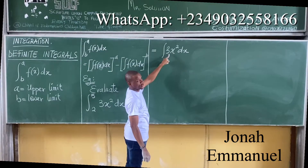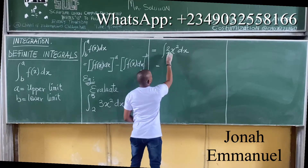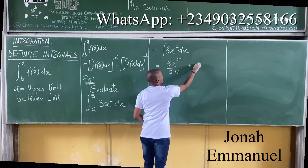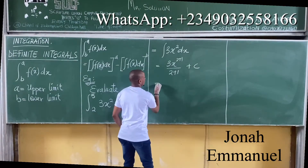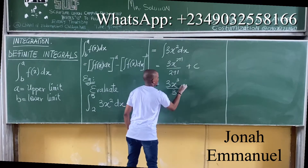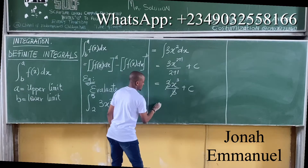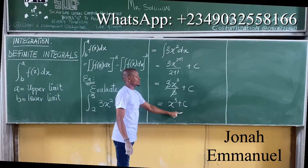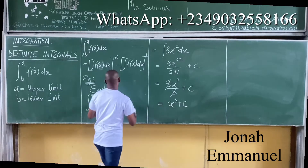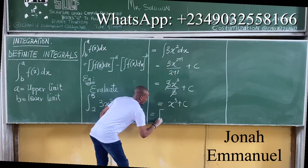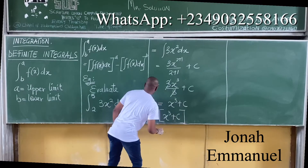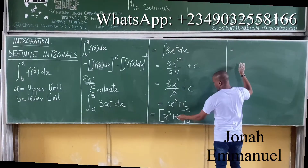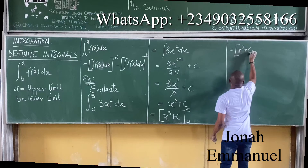Using the general method: the integral of 3x² dx equals 3x^(2+1) all over (2+1) plus C, which gives 3x³ over 3 plus C. This simplifies to x³ plus C. At this point, bring in your limits. This is now equal to x³ plus C, evaluated with limits 5 and 2.